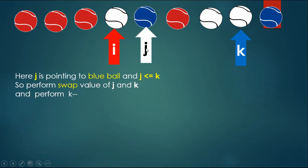Here j is pointing to a blue ball and j less than or equal to k, so perform swap of value of j and k, and perform k--.